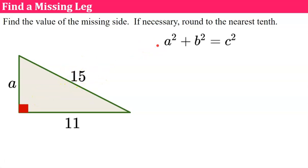So here's the Pythagorean theorem. We don't know a. b is 11 and c is 15. So let's square 11, which is 121, and 15 squared is 225.